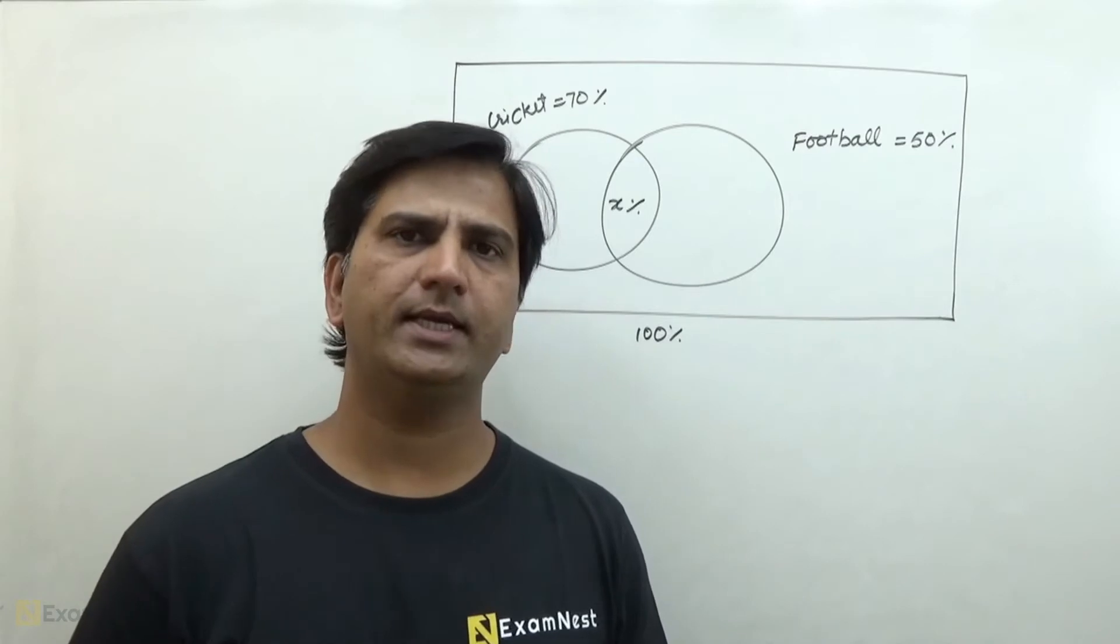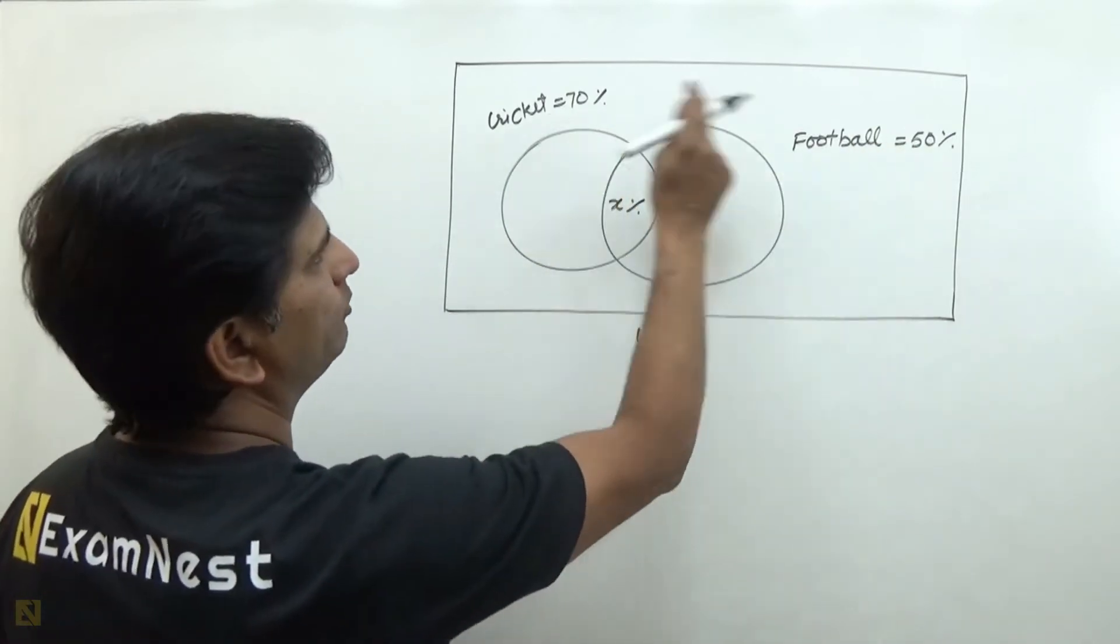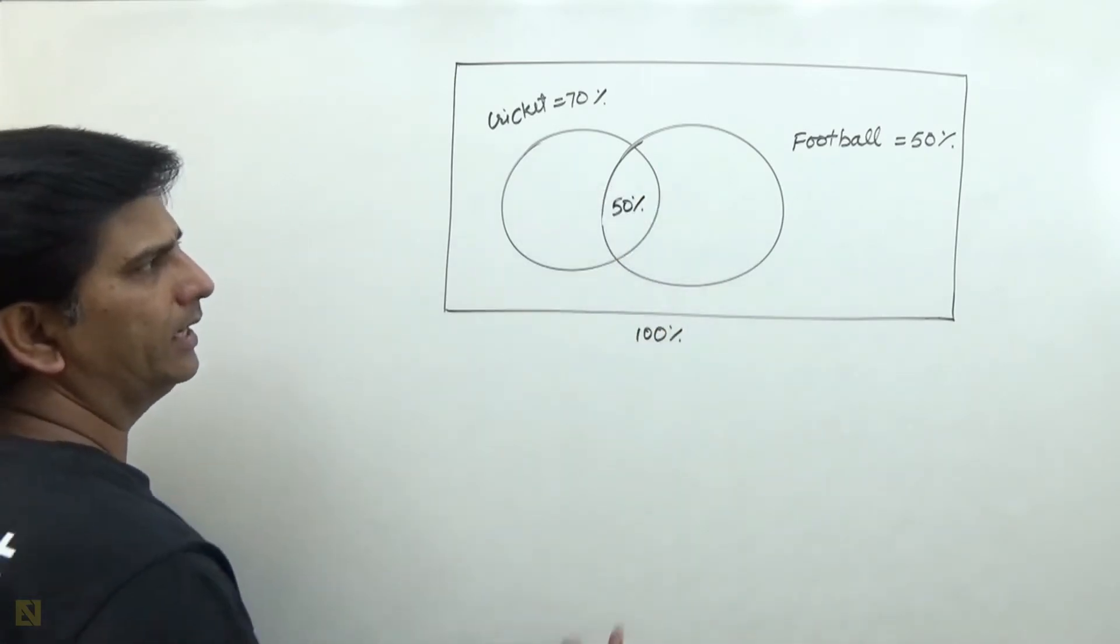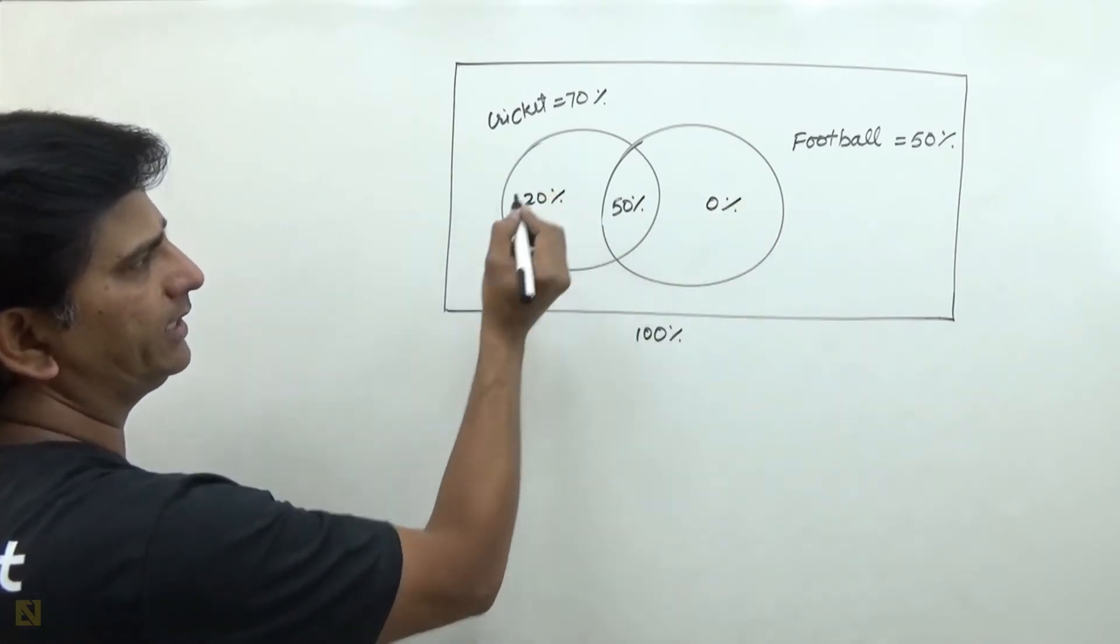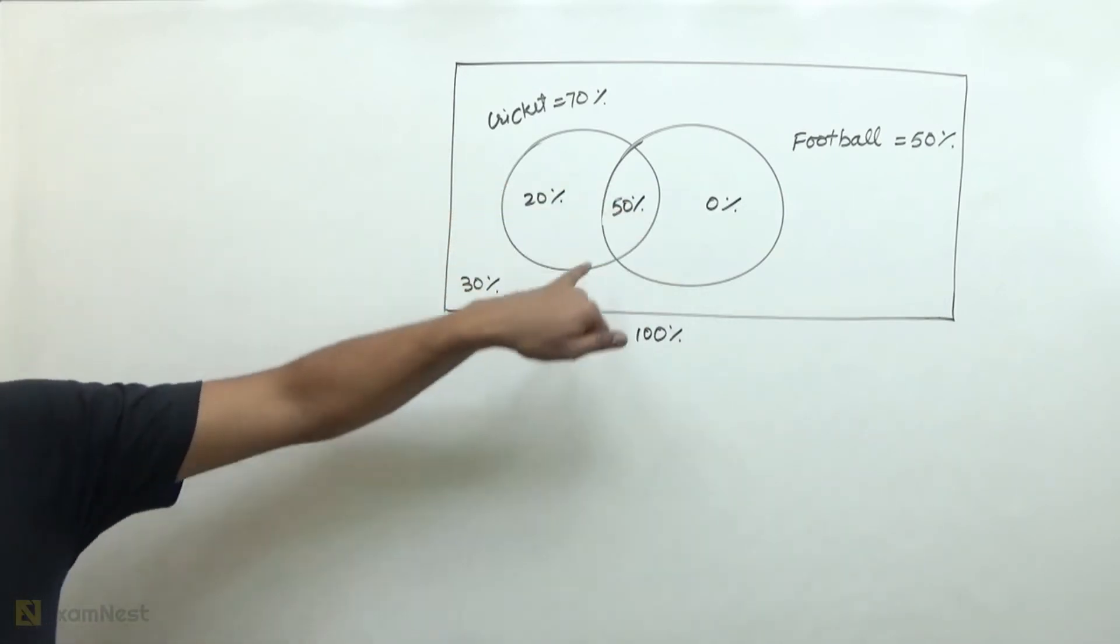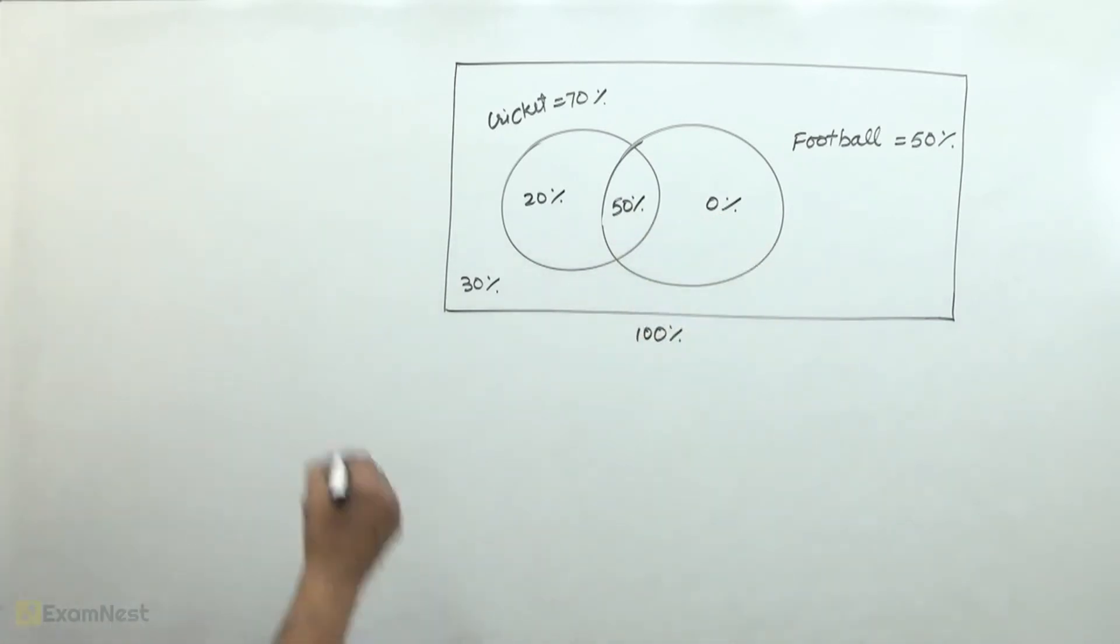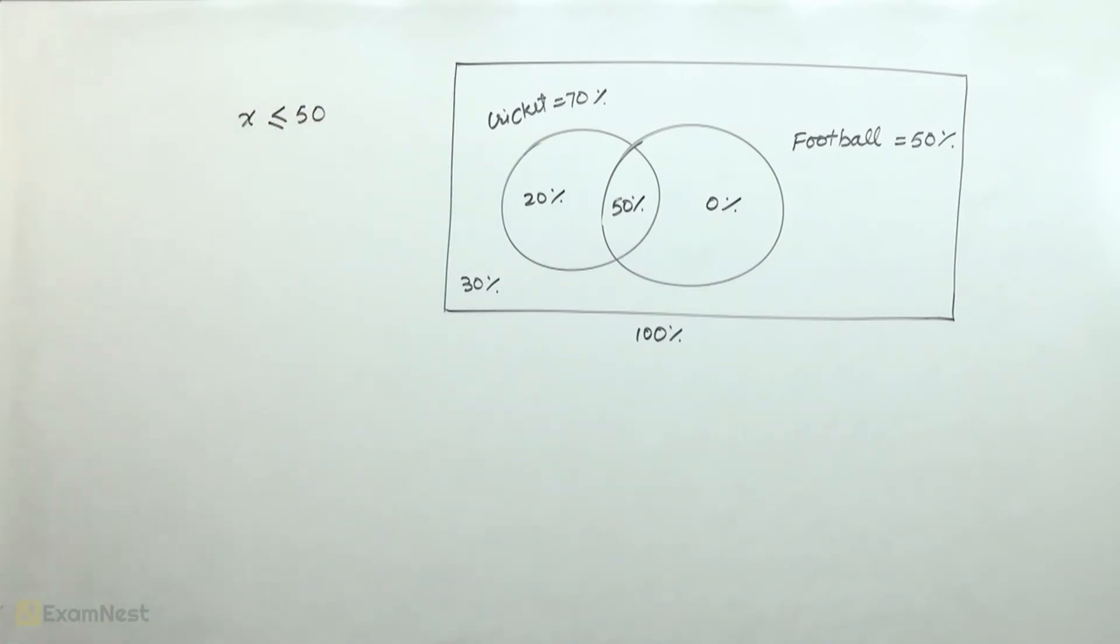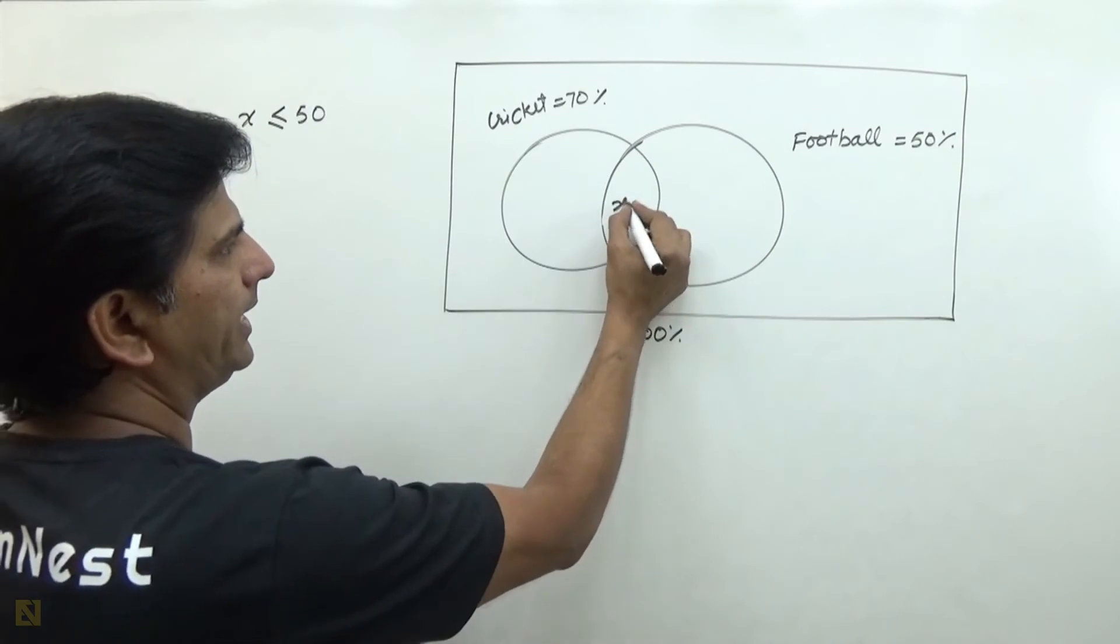The key in set theory is that no value here is negative. We can see here, if we can see the value of X, what can be the lowest value of X? If we minimize the X, then we will try to minimize the X.